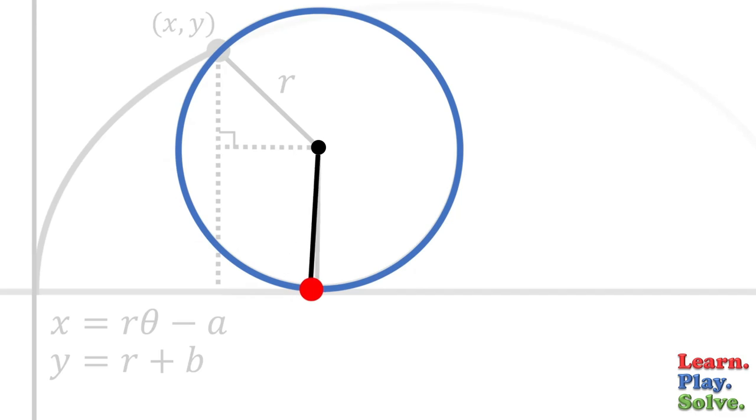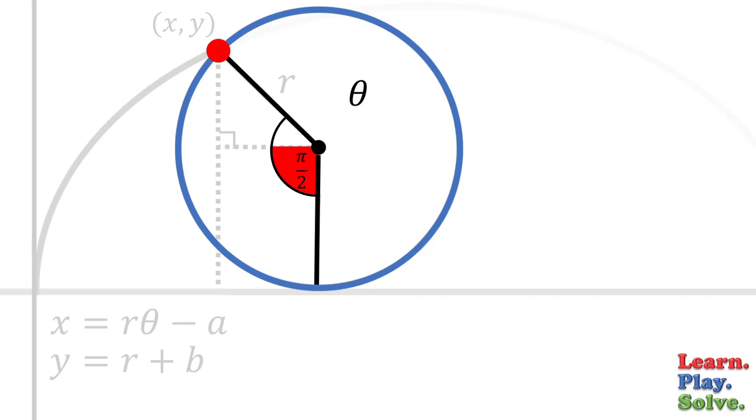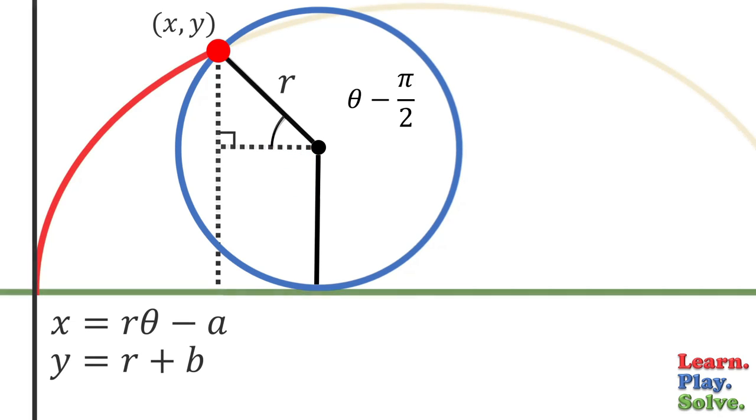Remember that the angle the circle has rotated up to this point is theta. This part is a right angle, or pi over 2 radians. So if we subtract pi over 2 from theta, that will be the angle inside this triangle. Also remember we called the legs of this triangle a and b.